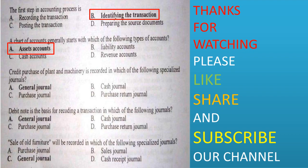Credit purchase of plant and machinery is recorded in which of the following specialized journals? General journal, cash journal, general purchase journal, or general purchase return journal. Option A is correct. Debit and credit is the basis for recording a transaction in which of the following journals? General journal, cash journal, purchase journal, or purchase return journal. Option A is correct.